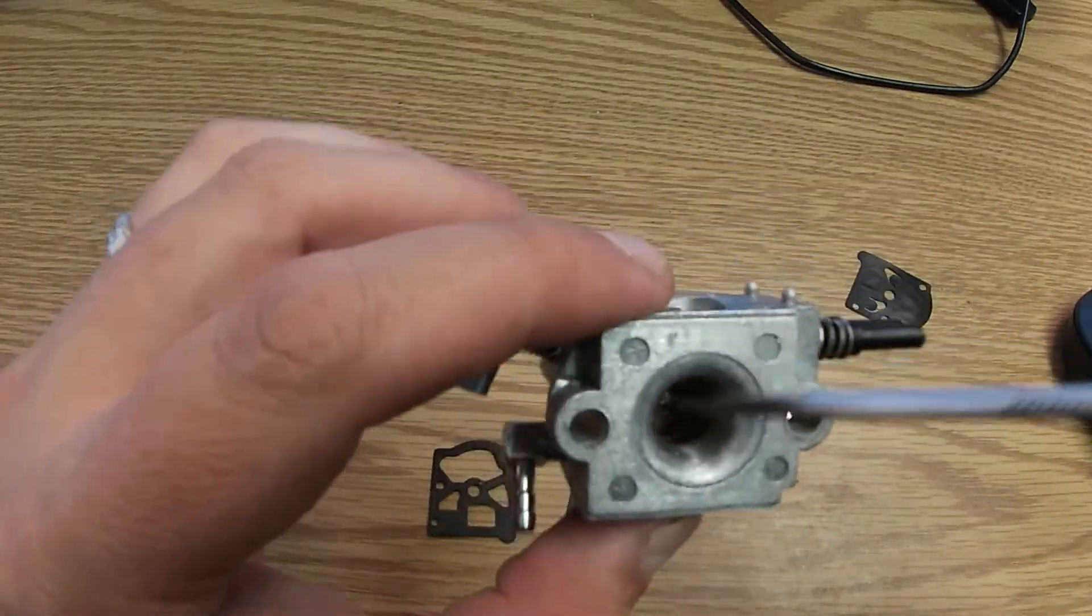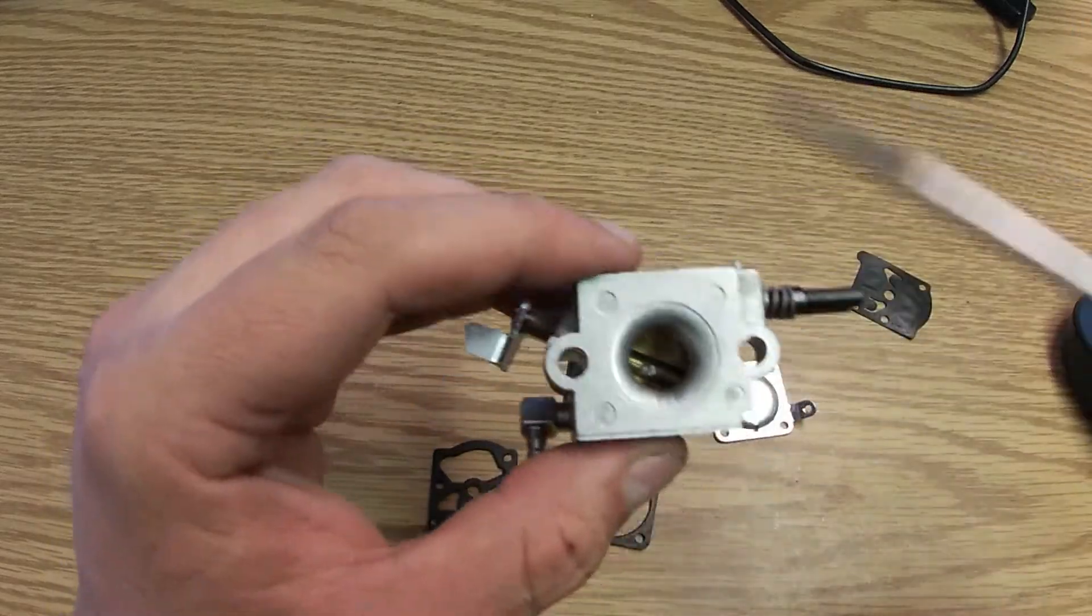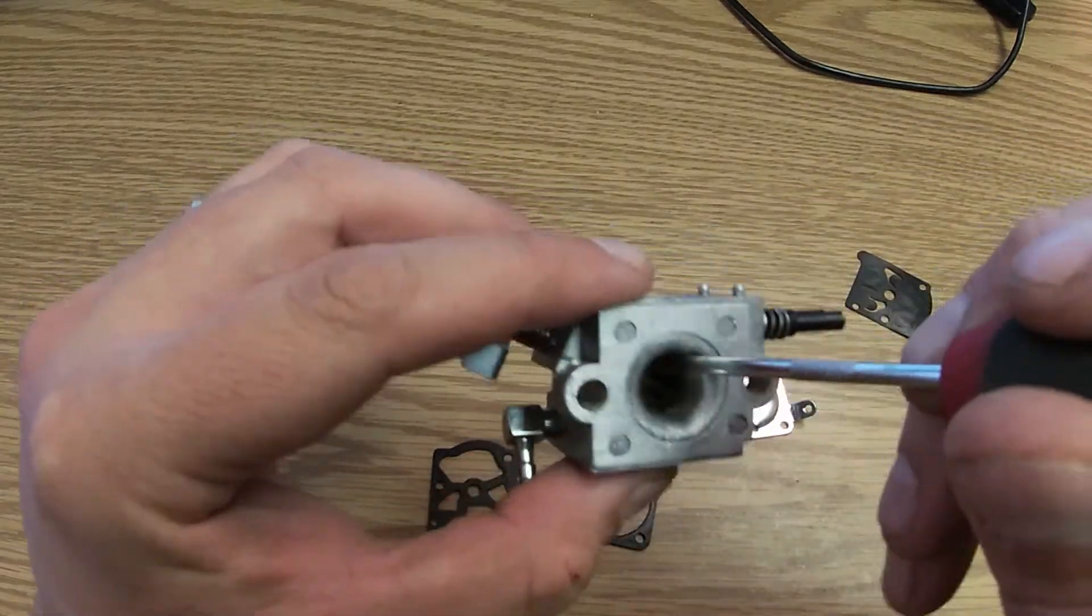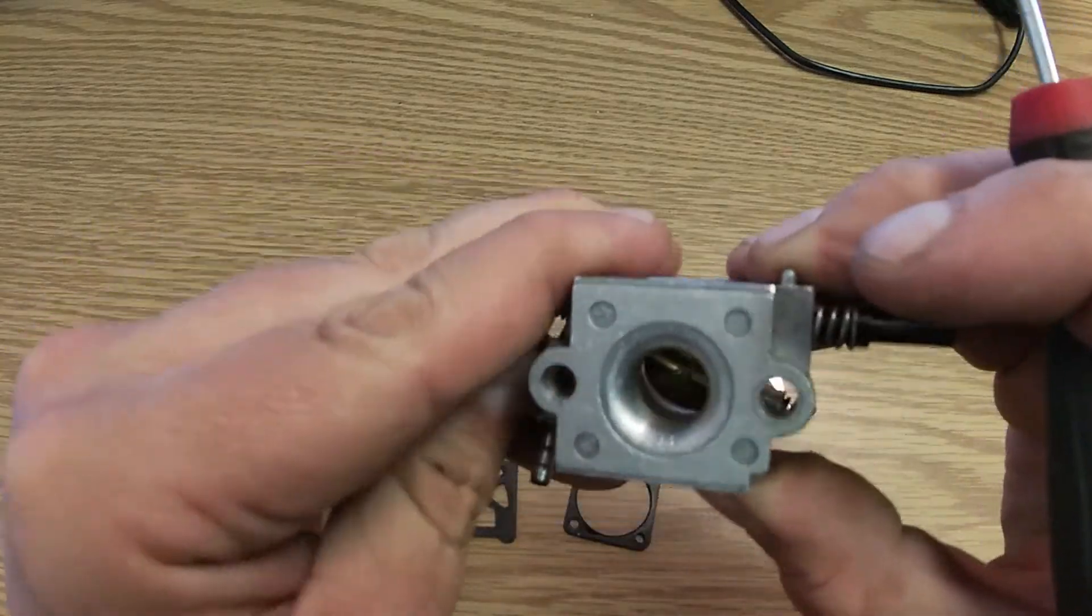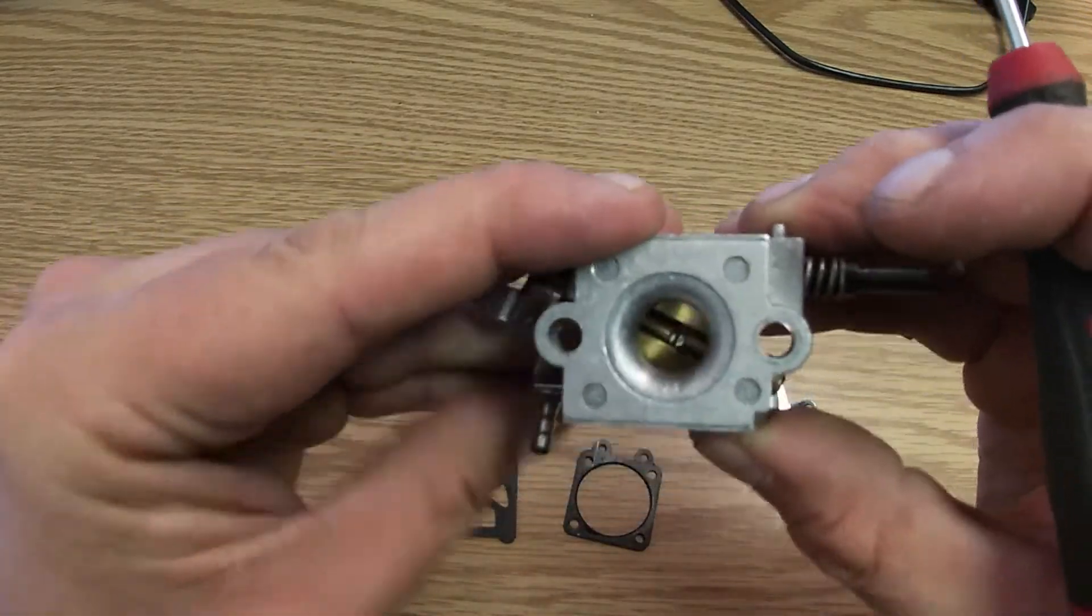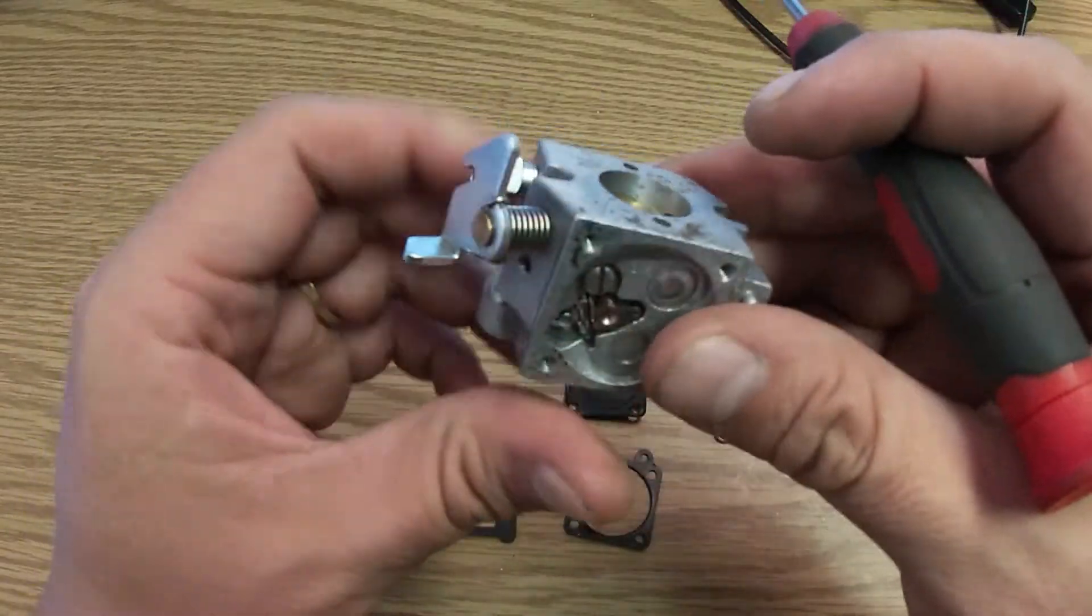Which if you notice on a two-stroke, because it's all mechanical with the diaphragms, there's no real venturi. It's just a circle, because it doesn't need a venturi, because it's not relying on sucking gas up through the bottom like a four-stroke carburetor.